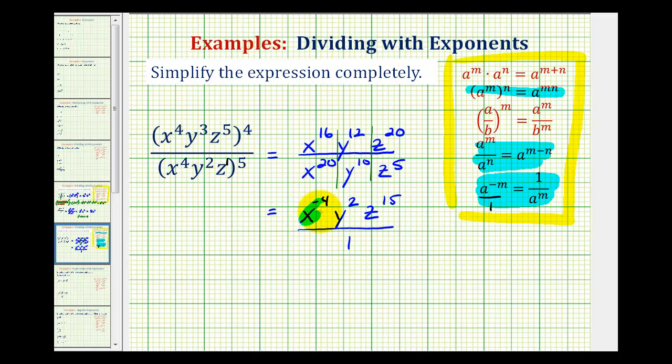if we move this down to the denominator, it changes the sign of the exponent. We would have y to the second, z to the fifteenth in the numerator, and x to the power of positive four in the denominator. Now this expression is considered completely simplified.